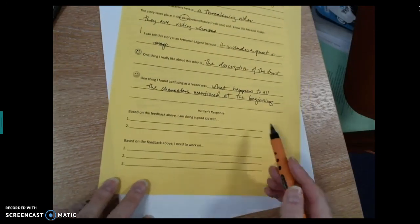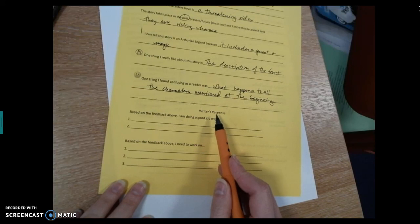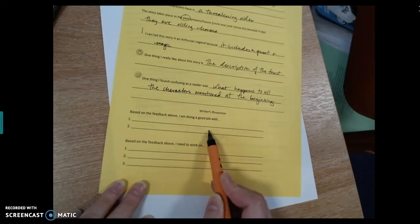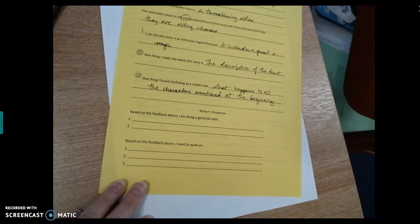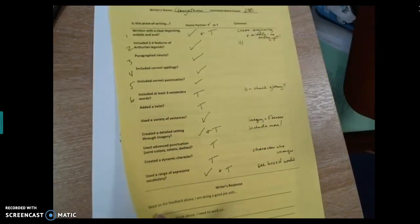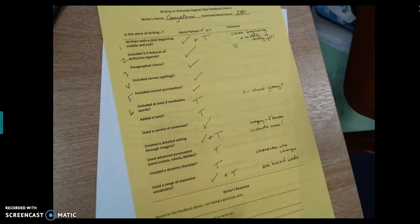Okay. And then down at the bottom, again, there's a place where Gayathri to respond. It says writer's response. Based on the feedback above, I'm doing a good job with, which you can put two things she's happy about. Based on the feedback above, I need to work on one, two, three. All right, that's it. So this is how you're going to get some feedback on your story. And once you've done that, you're going to be ready to work on your second draft. Thanks.